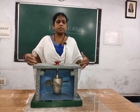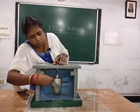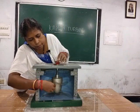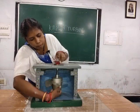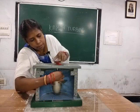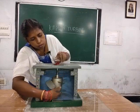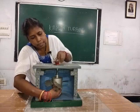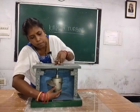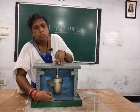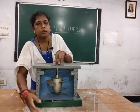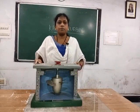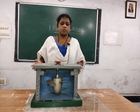The guide vanes direct the water to the runner vanes, which in turn rotate the hub and the shaft. The turbine starts rotating, moving the shaft, and the water then moves downwards towards the draft tube and the tail race. This is how the working of a Kaplan turbine is done.